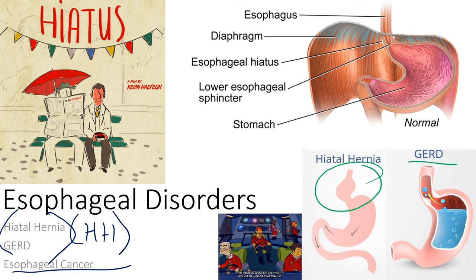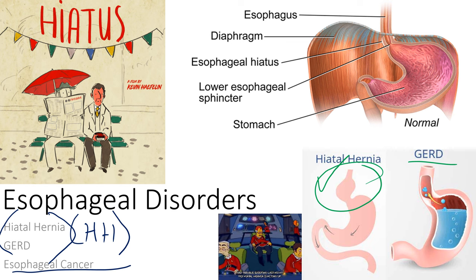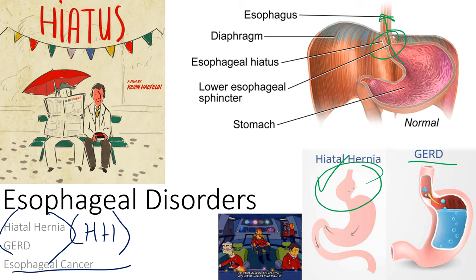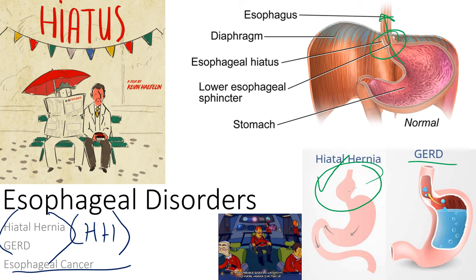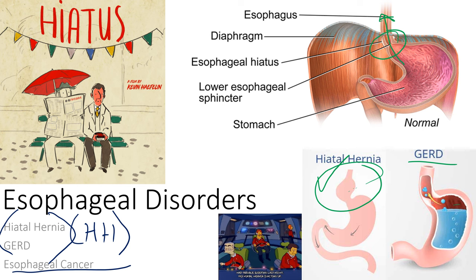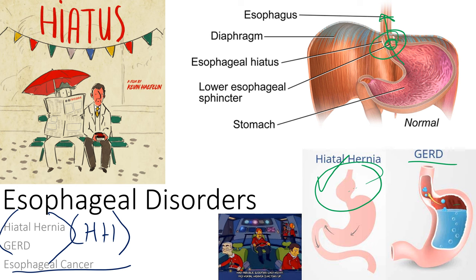A hernia is anything where something is where it doesn't belong. In a hiatal hernia, the top of the stomach — specifically the Z-line — slides up past the diaphragmatic hole called the hiatus. It could be just the top of the stomach, or even the whole stomach or transverse colon making its way up.